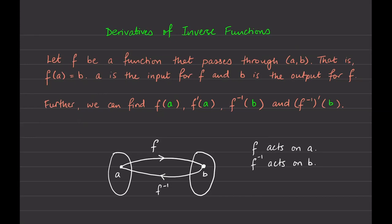Here's another way to look at it. Using Venn diagrams: the left circle is the domain of f — all the inputs for f — and the right circle is the range of f, where the outputs live. So f takes the element a and maps it to b. a is the input, b is the output. Similarly, when we talk about the inverse function, it maps b back to a.